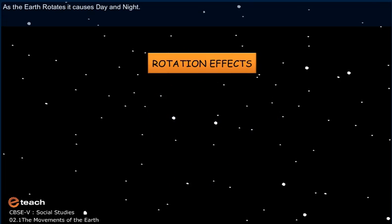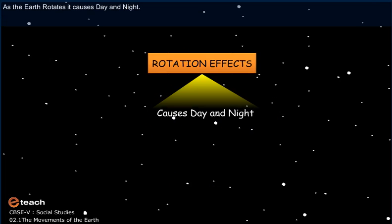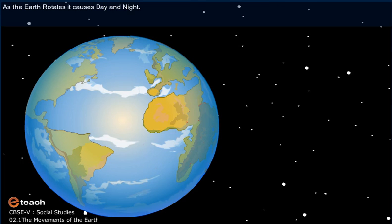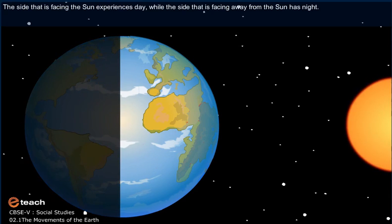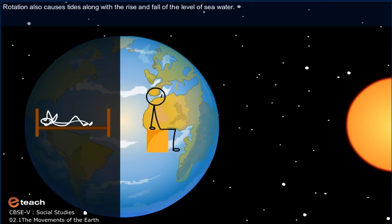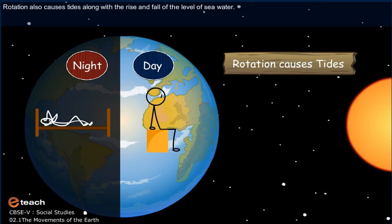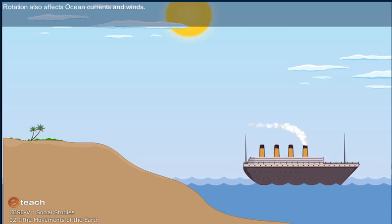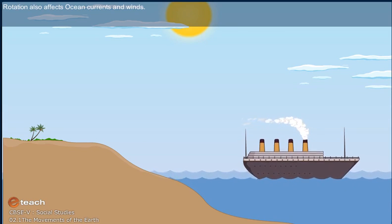As the Earth rotates, it causes day and night. The side that is facing the Sun experiences day, while the side facing away from the Sun has night. Rotation also causes tides, along with the rise and fall of the level of seawater. Rotation also affects ocean currents and winds.